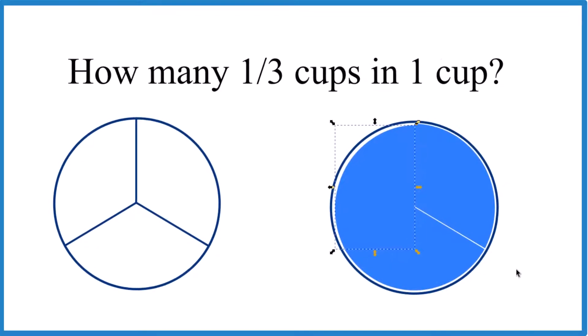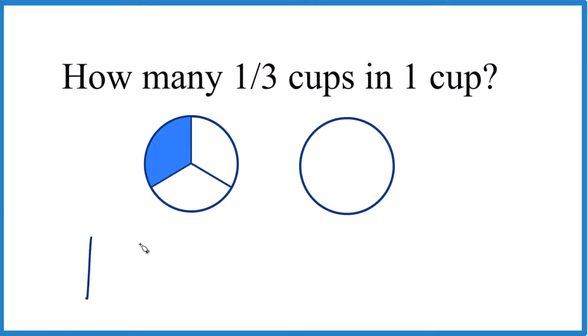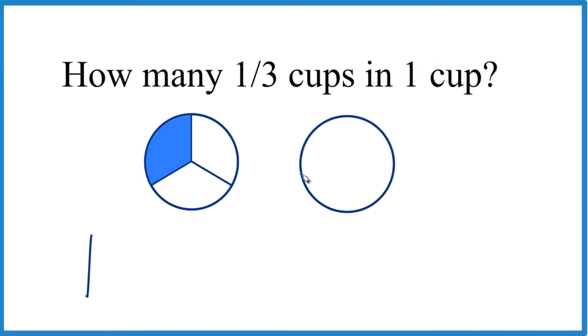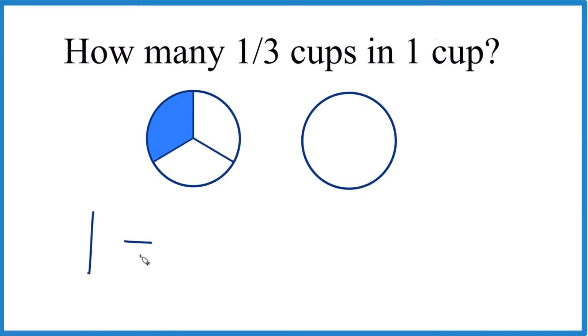We can do this mathematically as well. We have our one cup, and we want to know how many times one-third goes into it. So one divided by one-third. It's actually a little bit easier if we take the reciprocal of one-third.